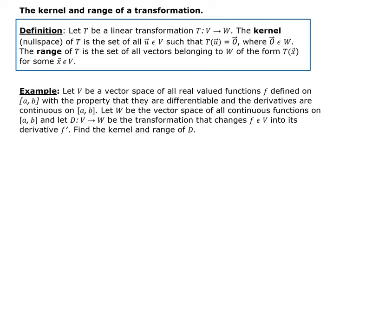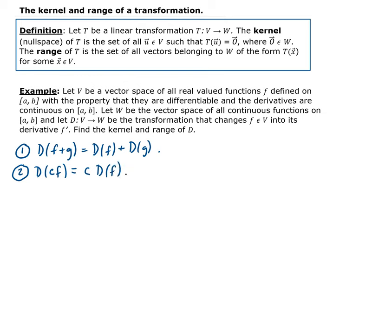First, let's verify that D is a linear transformation. The derivative of F plus G equals the derivative of F plus the derivative of G — so we can separate those, satisfying the first property. For the scalar property, if you take the derivative of a constant C multiplied by a function, you can factor out that constant from the derivative. Both of these satisfy the linear transformation properties, forming the superposition principle.